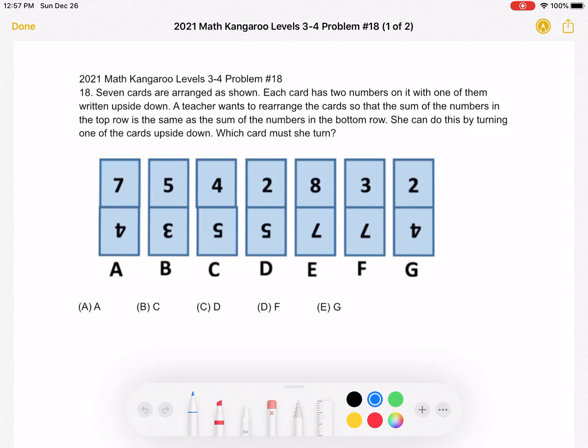A teacher wants to rearrange the cards so that the sum of the numbers in the top row is the same as the sum of the numbers in the bottom row. She can do this by turning one of the cards upside down. Which card must she turn?